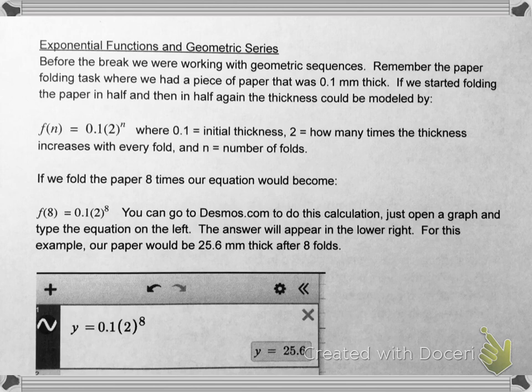Okay, so as a review, remember we worked with geometric sequences and we did the paper folding task where we had a piece of paper and it was 0.1 millimeter thick. If we started folding it in half and then in half again, we could model that function like this, where this was the initial thickness, then the 2 was how much the thickness increased every time we folded it, and then n was the number of folds.